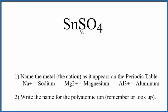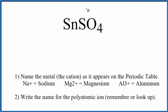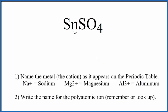To write the name for SnSO4, first we need to recognize we have the sulfate ion here. This is a polyatomic ion, SO4. We also have tin, which is a transition metal. So we have this transition metal bonded to this group of nonmetals in the sulfate ion. It's an ionic compound, and we can use these rules to write the name for SnSO4.